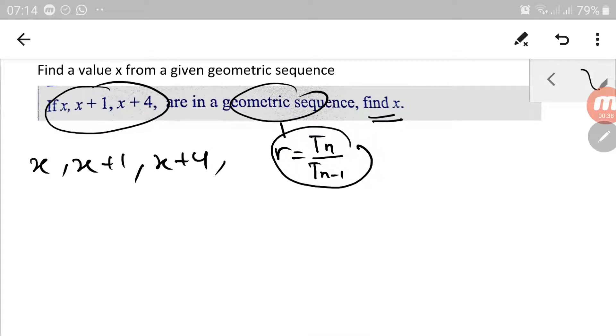r simply means if we divide a term with the term before it. So we can divide this, x plus 1, by the term before it, this one.